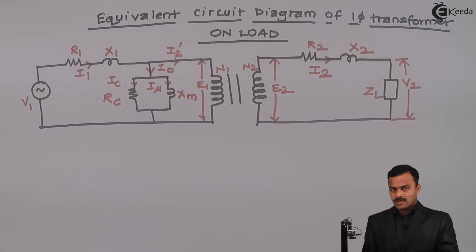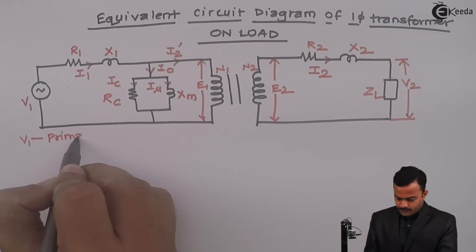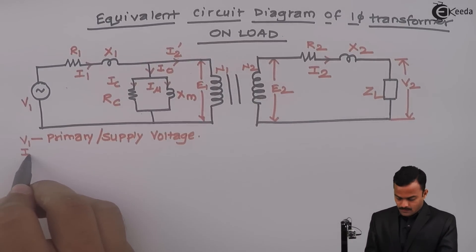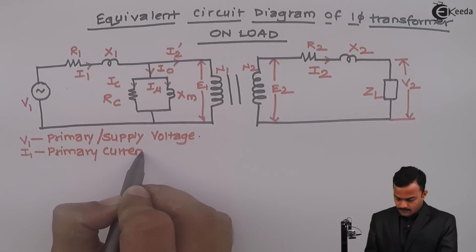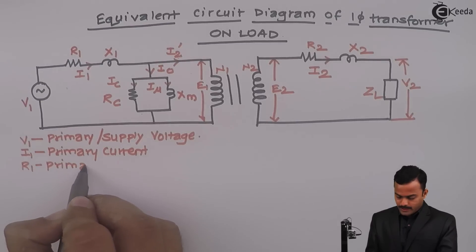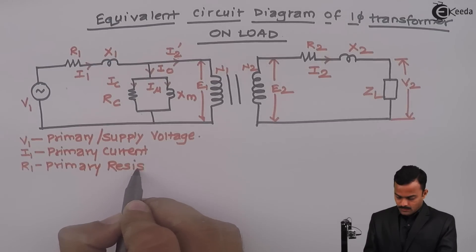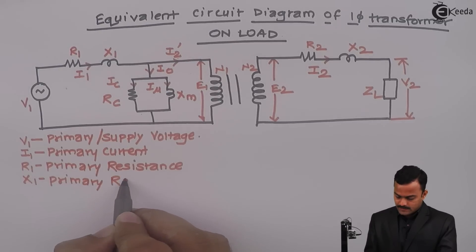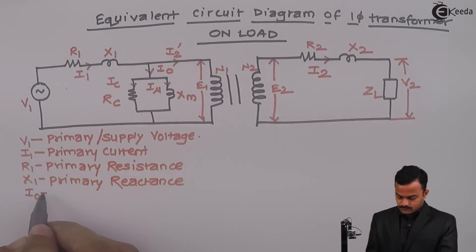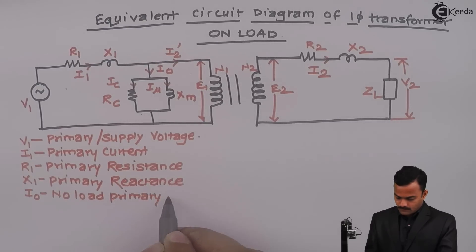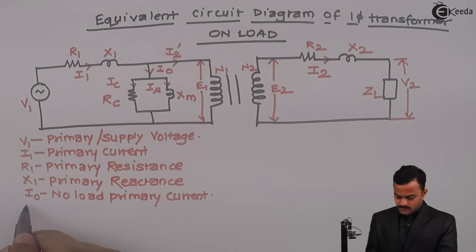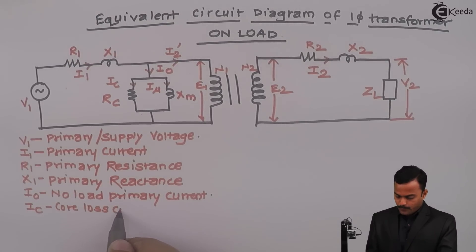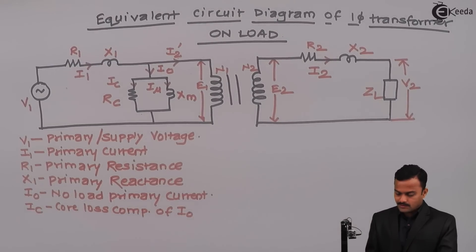Let's list out all of these parameters once again. V1 is the primary or supply voltage. I1 is the primary current. R1 is the primary winding resistance. X1 is the primary leakage reactance. I0 is the no-load primary current, which has two components: one is Ic, flowing through Rc, called the core loss component of the no-load primary current I0.